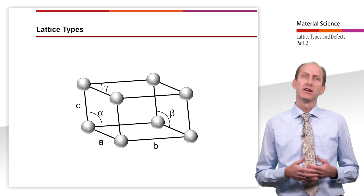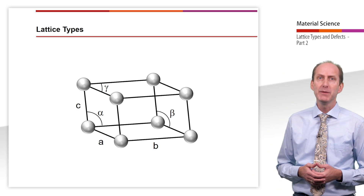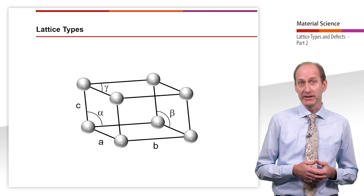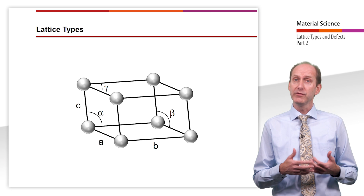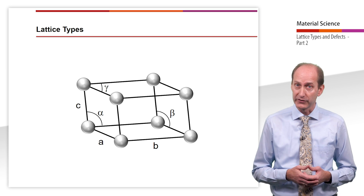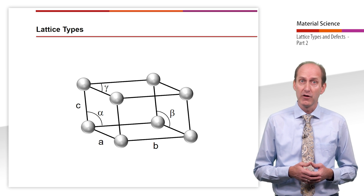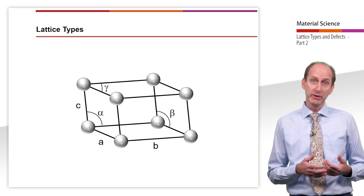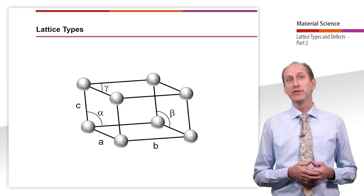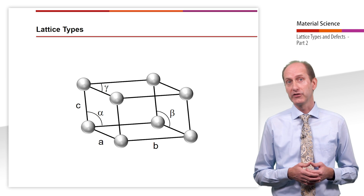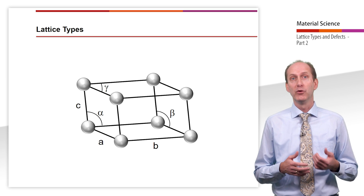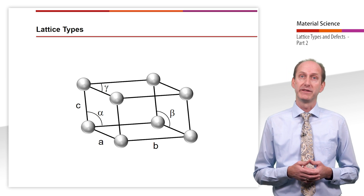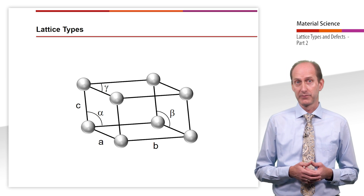Depending on the shape of the lattice cells, we distinguish between seven different crystal systems, of which the cubic, the tetragonal and the hexagonal system are of most importance for metallic materials.